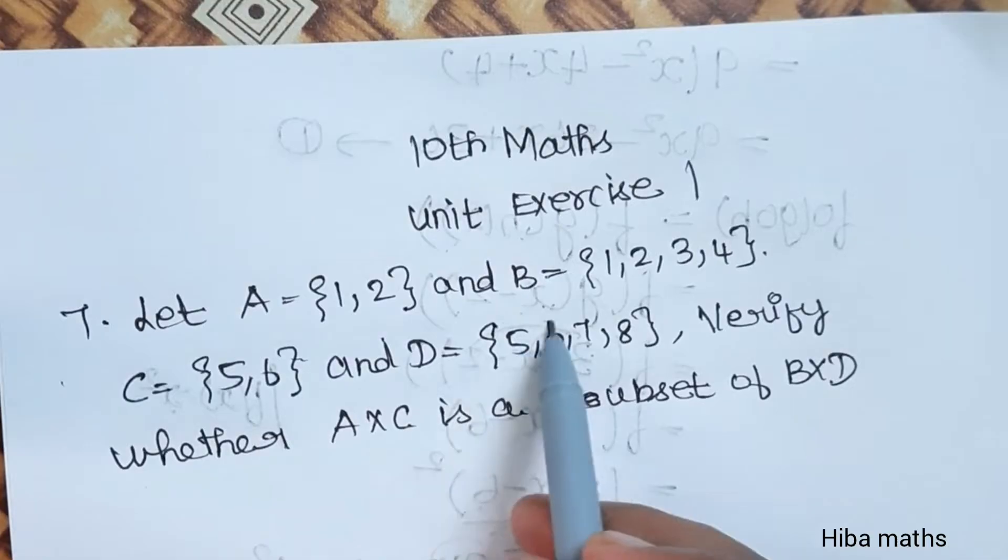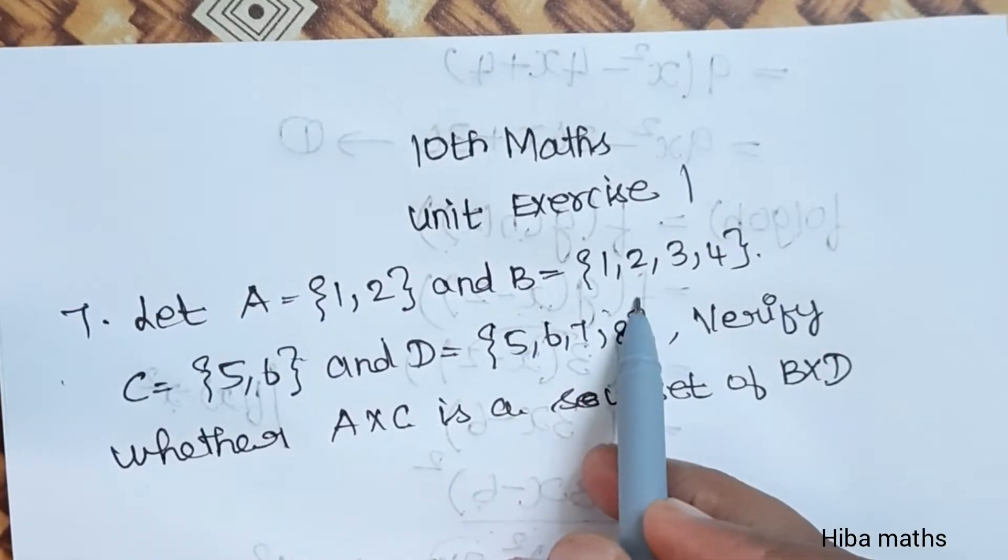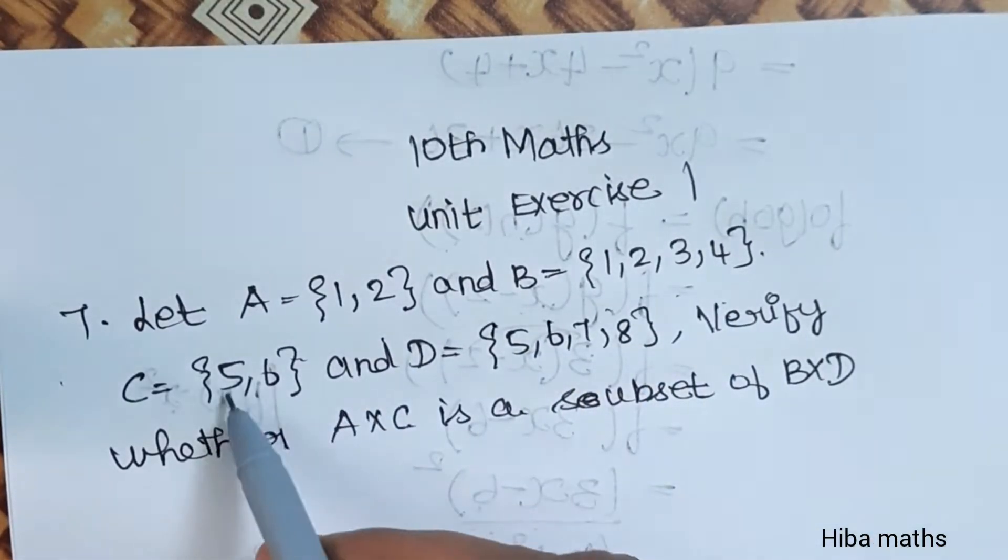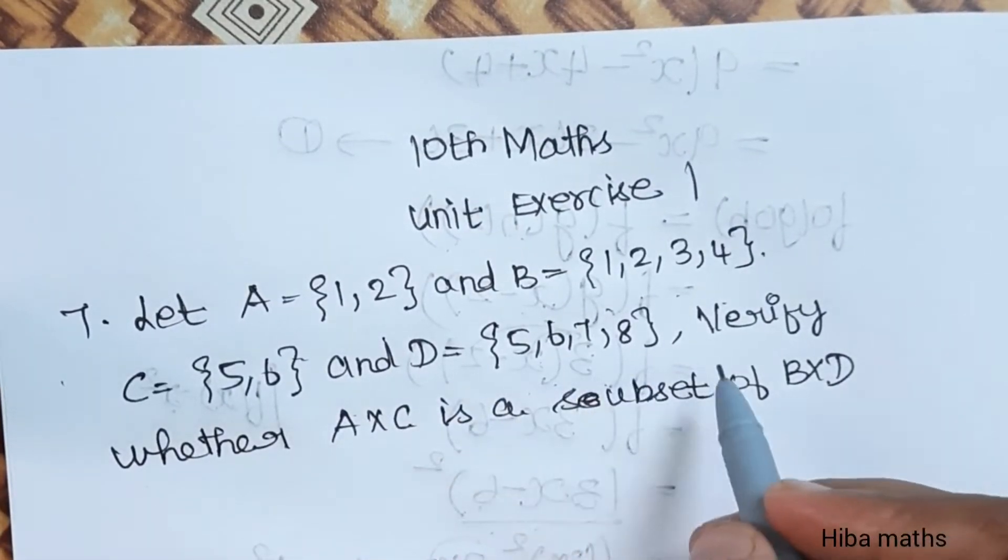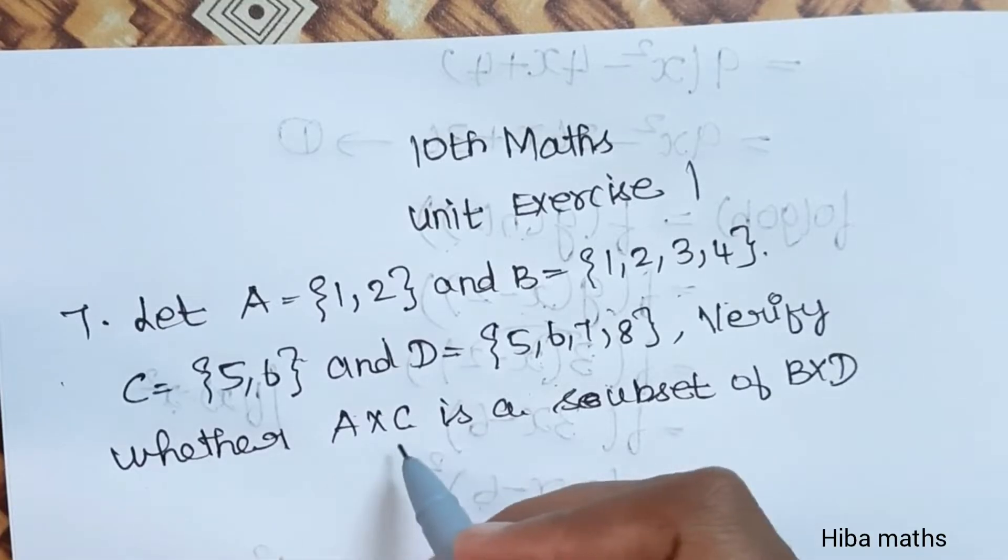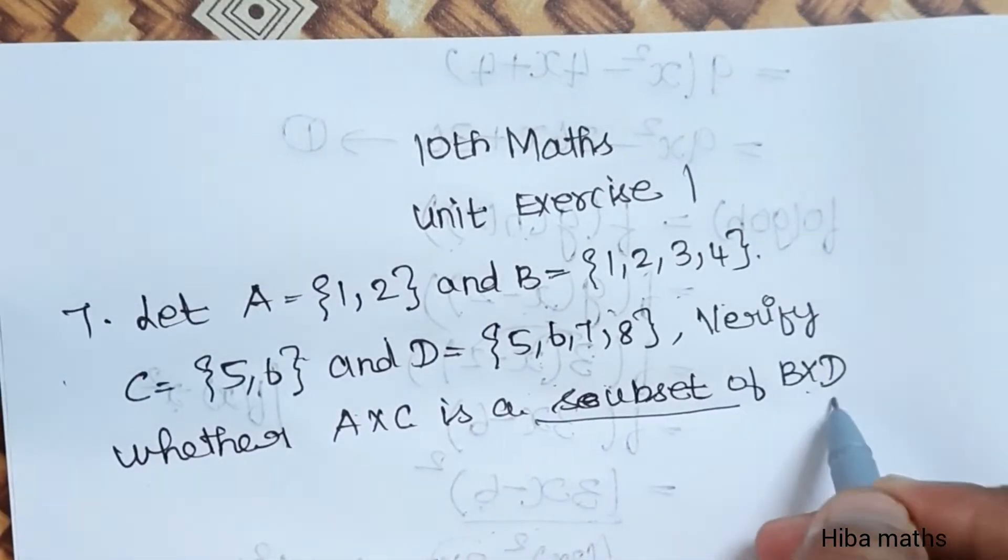Let A = {1,2}, B = {1,2,3,4}, C = {5,6}, and D = {5,6,7,8}. Verify whether A×C is a subset of B×D.